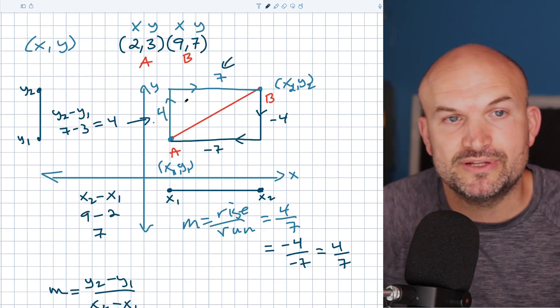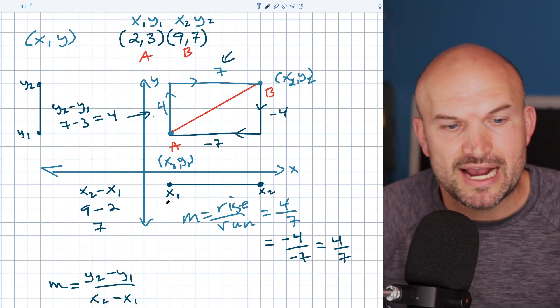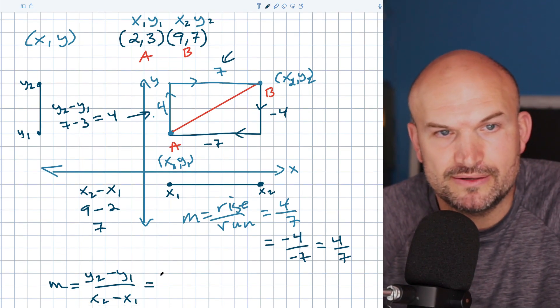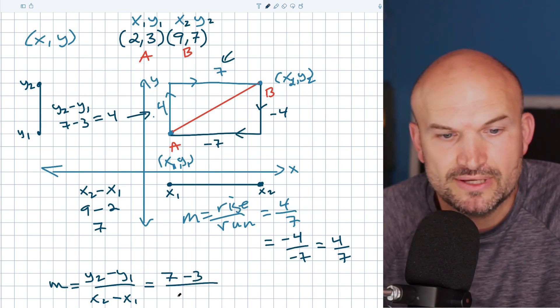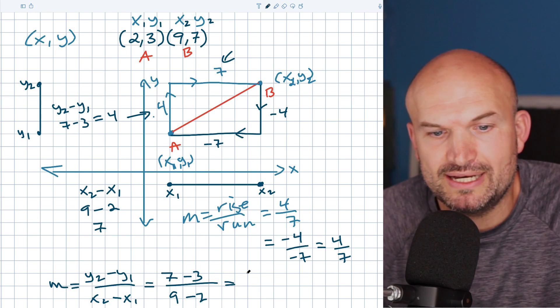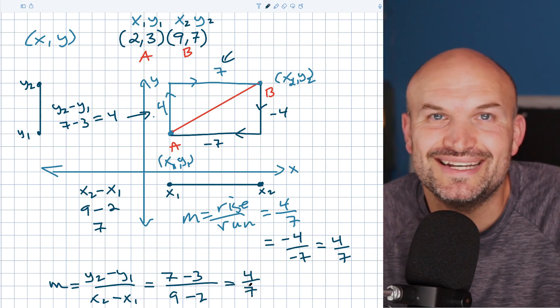So in this case, all we simply do is just label this as X1, Y1, and label this as X2, Y2. And then you just take your corner points and just plug them in. So it's seven minus three - now we already calculated this, but I want to go through it as well - and therefore that's going to be nine minus two. And what we get here is four over seven. And there you go. I'll look forward to seeing you in the next video.